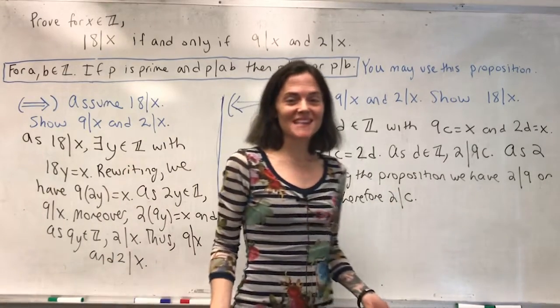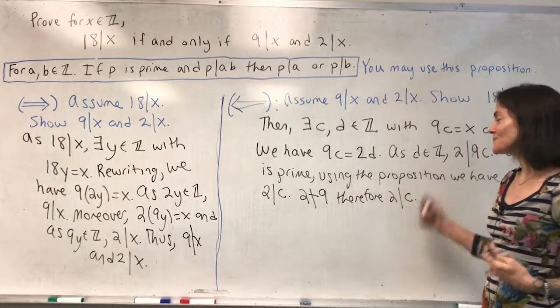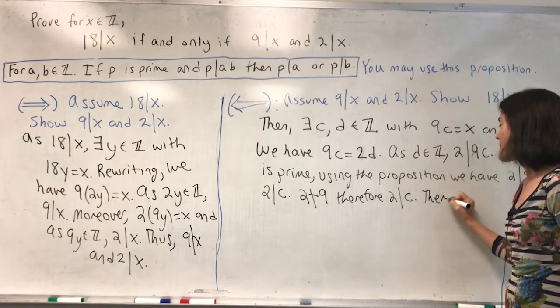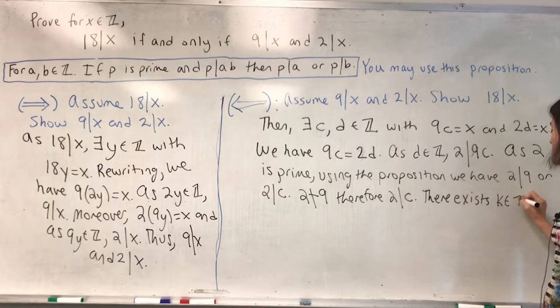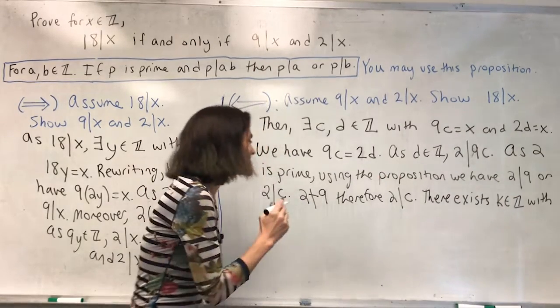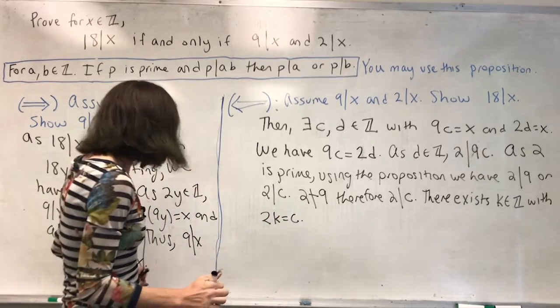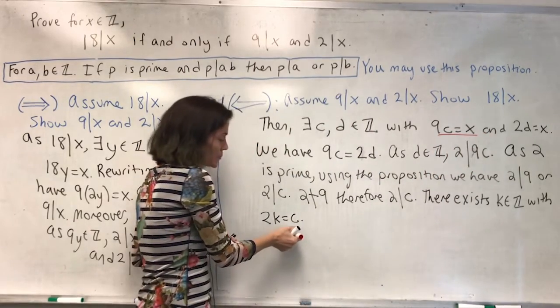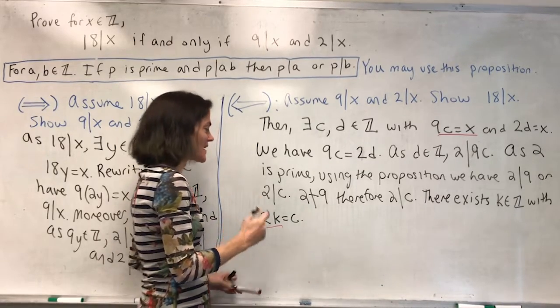Remember, this is what I said I was trying to get to, and so this is wonderful. At this point, we will just complete the proof. 2 divides c means there exists a k in Z with 2k equals c. And now, as I mentioned, we will go back to this and put in this value for c, and we will be able to conclude 18 divides x.